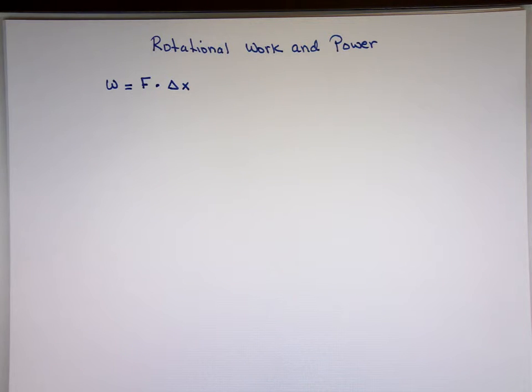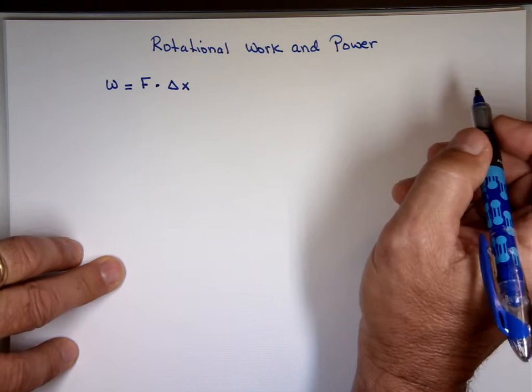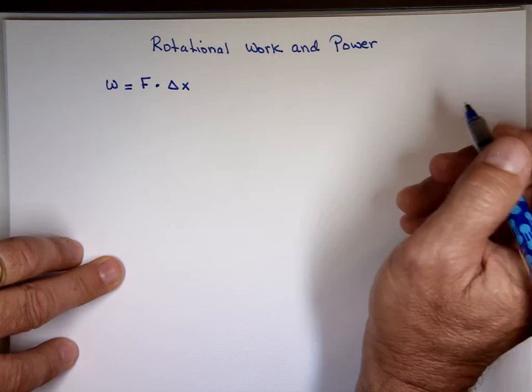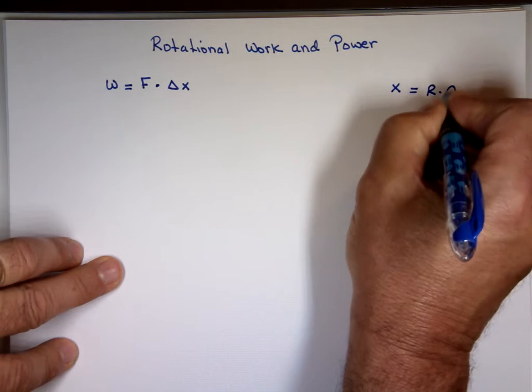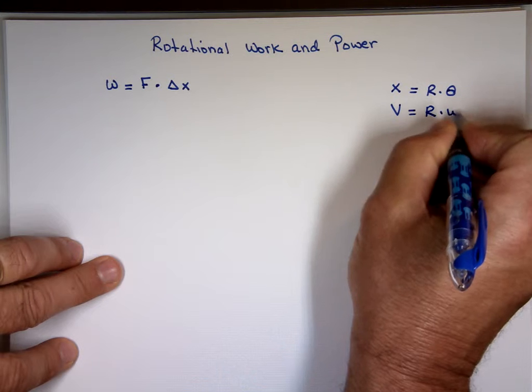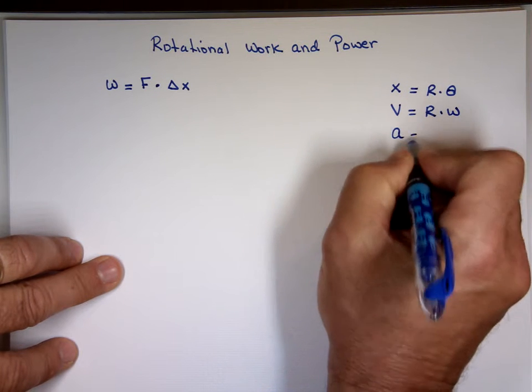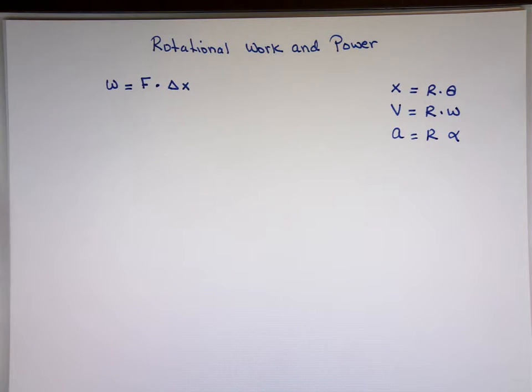Now, if you recall, we had some relationship between linear versus angular. And we said x equals r times theta. We said v equals r times ω. And we said a equals r times alpha. Remember these equations? There is a relationship between things that's moving in a circular pattern versus linear.